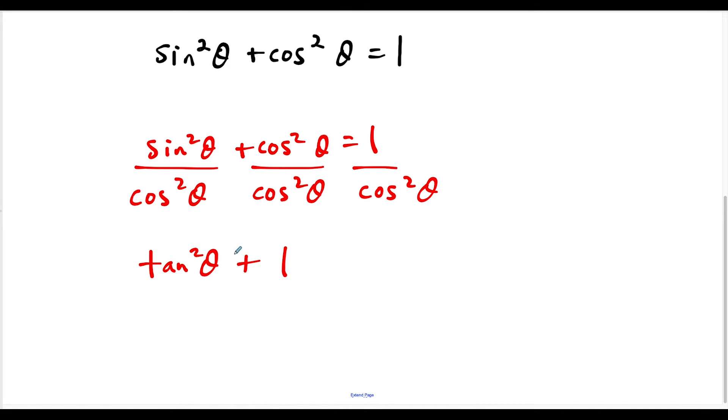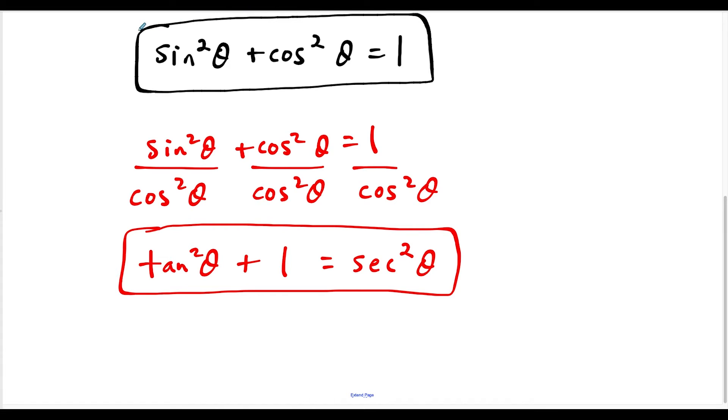So we have tan squared plus one. And now one divided by cosine is the identity for secant. So if I have one over cosine squared, this is going to be equal to secant squared, like this. So now we have two formulas, we have the original formula. And we also have this new one that I boxed off in red, tangent squared plus one is equal to secant squared. Of course, tangent squared theta plus one equals secant squared theta.